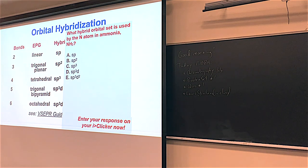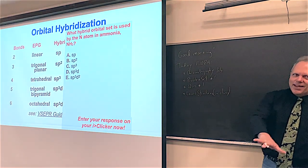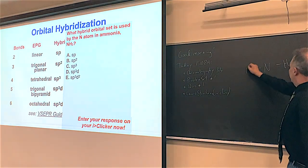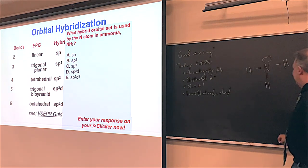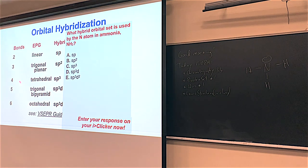Here's the kind of question you might see: what hybrid orbital set is used by the nitrogen atom in ammonia, NH3? If you see a problem like this, the first thing you've got to do is draw the Lewis structure. Ammonia has one lone pair on the nitrogen and three single bonds to hydrogen. So what is the electron pair geometry around the nitrogen in ammonia? Tetrahedral. And any time you have tetrahedral, it's SP3 hybridized.